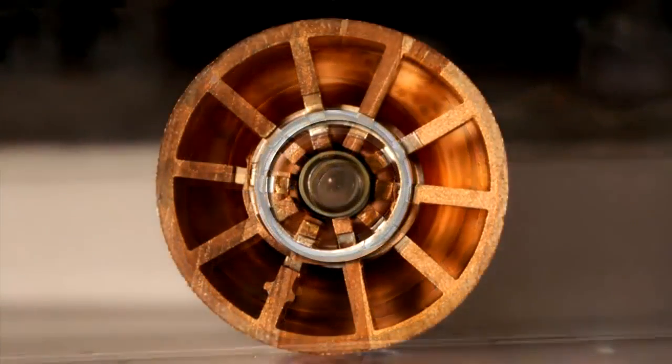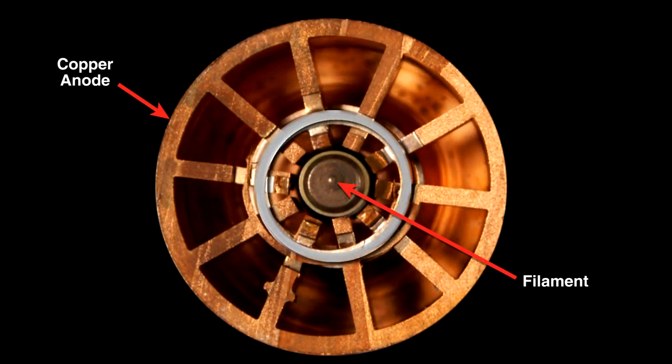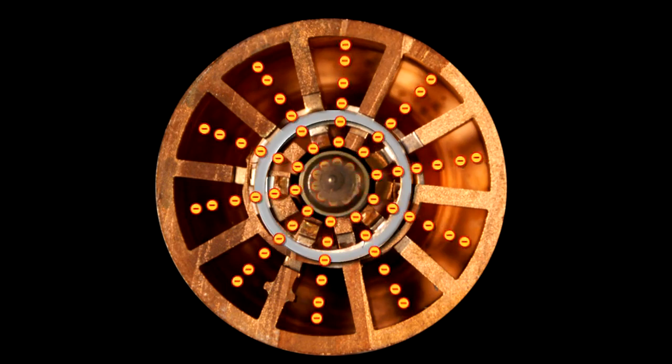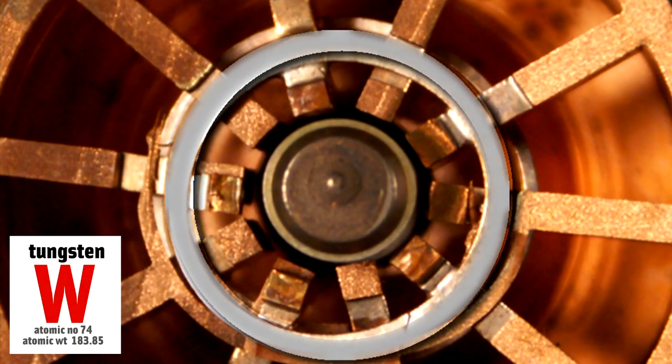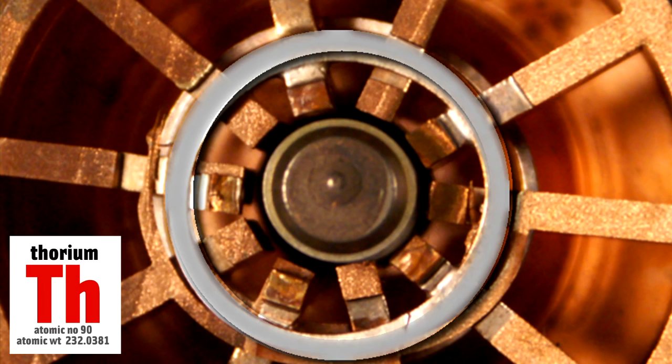You apply a large voltage across both the inner filament and the circular copper outside. This voltage boils electrons off the center filament and they fly toward the circular copper section. The filament is made from tungsten and thorium. Tungsten because it can withstand high temperatures and thorium because it's a good source of electrons.